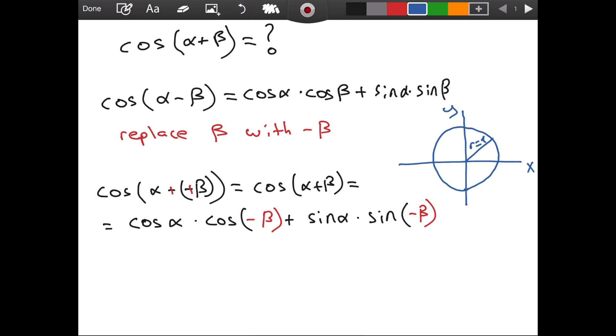So, since if we measure this angle as beta, well, then the x coordinate will be 1 times cosine of beta. So, it will simply be cosine of beta comma sine of beta. So, x is the cosine and y is the sine on our unit circle. And this is the angle, this is the angle, this is the angle beta.